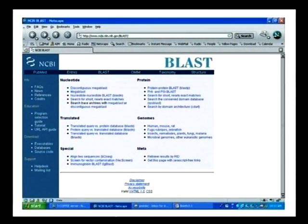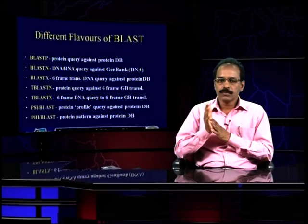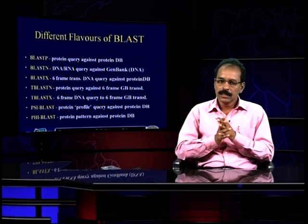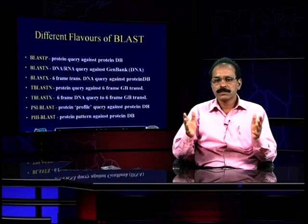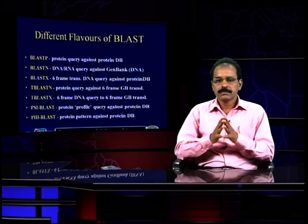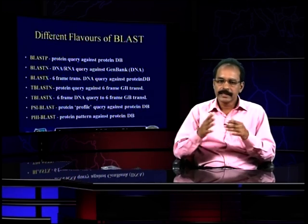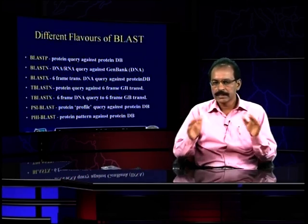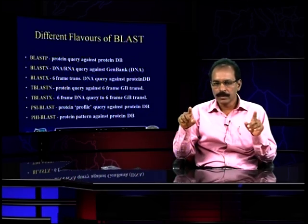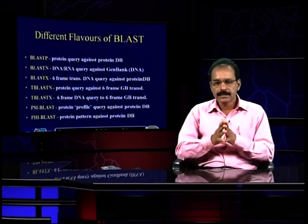Before going to BLAST, there are different flavors of BLAST. BLASTP is a protein query against a protein database. BLASTN is a DNA/RNA query against GenBank. BLASTX is a 6-frame translated DNA query against a protein database. TBLASTX is against a 6-frame translated nucleotide database. A 6-frame refers to the 3 bases on each strand of the open reading frame — upward and downward — making 6 frames total. There is also PSI-BLAST and PHI-BLAST.